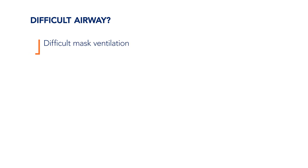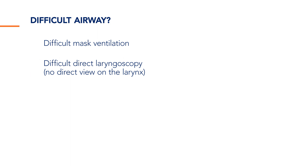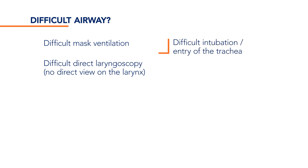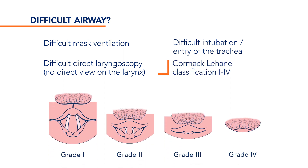Problems with airway management can either be caused by difficult mask ventilation, difficult visualisation of the larynx during direct laryngoscopy, or difficult entry of the trachea. For the description of the visualisation of the larynx during direct laryngoscopy, the well-known Cormack-Lehane score can be used.